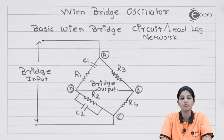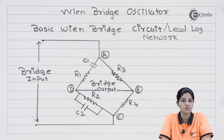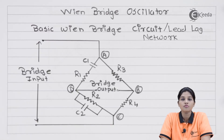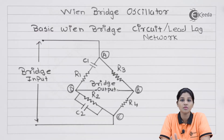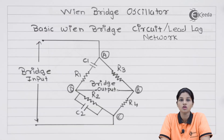For producing oscillations at the output, the oscillator uses a feedback that is called positive feedback. In case of positive feedback, the feedback signal — that means the part of output signal — and the input signal are in phase with respect to each other.